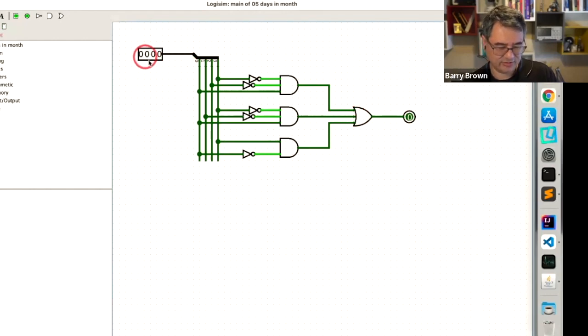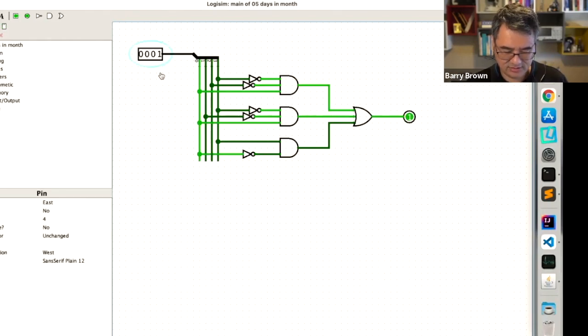So I can punch in a binary number over here, representing the number of the month. And then this light should light up according to the number of days in the month. So this number here represents January. It has 31 days, so the light is off. February has less than 31 days, so the light is on.